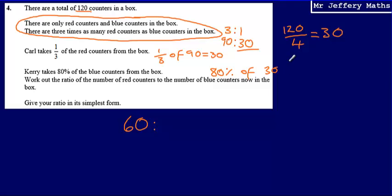We can say that 10% of 30 would be 3, so 80% would be 24. That means Kerry's taking 24, which means there would be 6 blue counters left in the box.